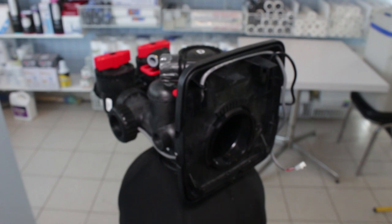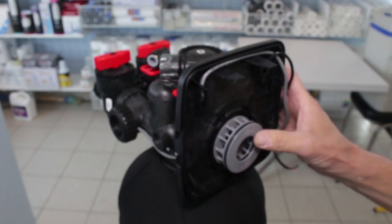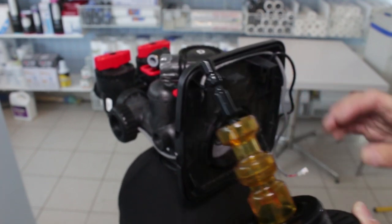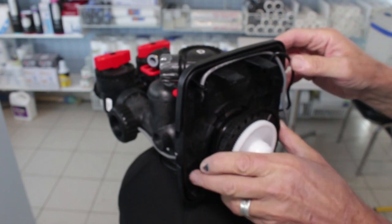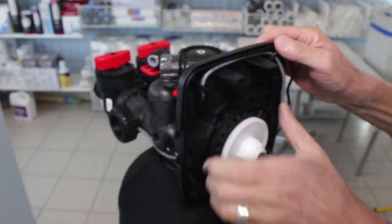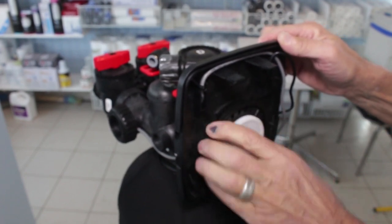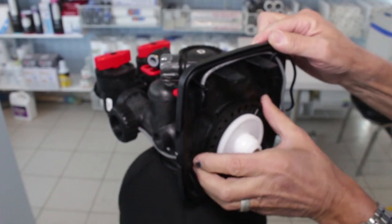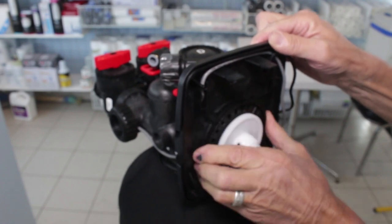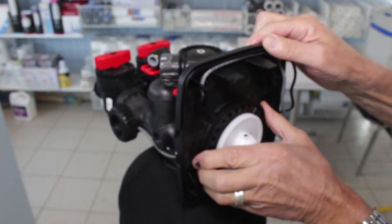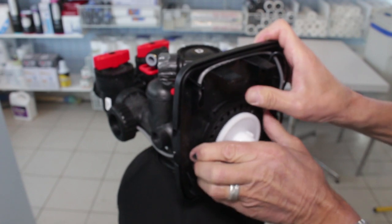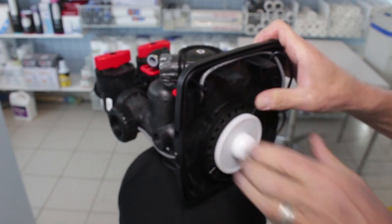And to reassemble, it's the reverse of the procedure. Put the seal pack in, and we just put in the drive assembly. Now you don't want to reef this in here, but you do want to make it a little more than hand tight.